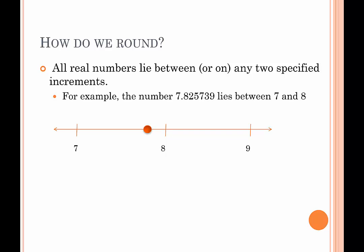How do we round numbers? All real numbers lie between or on any two specified increments. For example, the number 7.825739 lies between 7 and 8. When we round — this would be called rounding to the nearest whole number — we round to the whole number that it is closest to. Looking at the number line, we can see that the given number is closer to 8 than any other whole number. So 7.825739 is approximately 8 when rounding to the nearest whole number — it is closest to 8 on a number line.